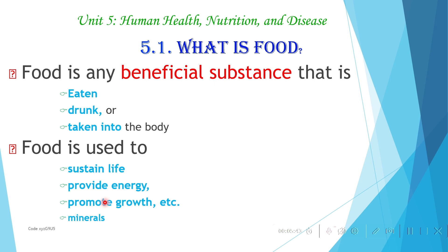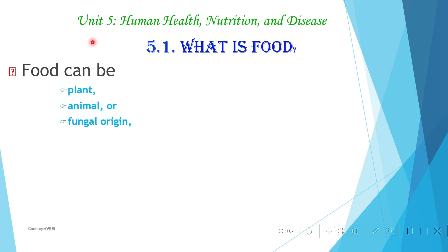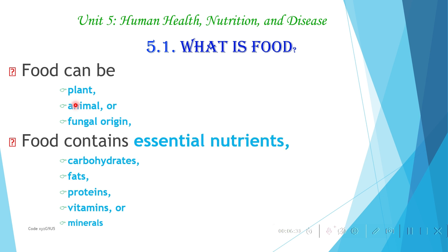Food can be of plant origin, animal origin, or fungal origin. Plant sources include cabbage, carrot, wheat, potato, orange, mango, pineapple, and so on. Animal sources include beef, meat, egg, and milk. Some foods also come from fungal origin. These are the sources of food.